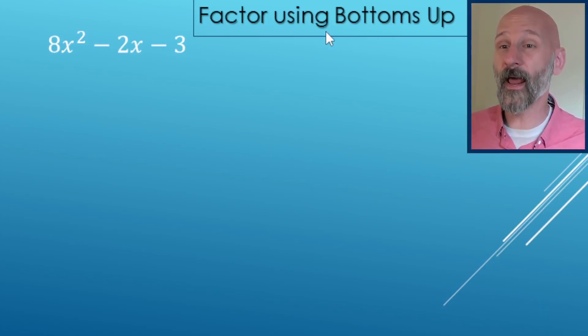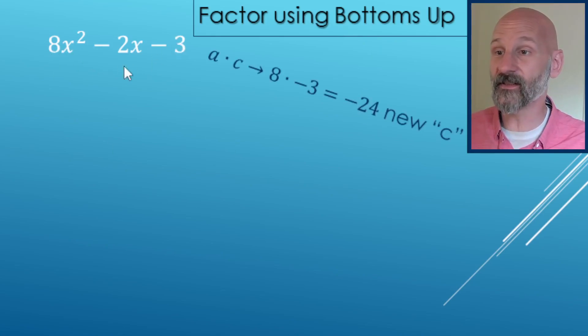Here we're going to factor a quadratic using the bottoms-up method. So here we go. Step number one, take the first and the last, the A and the C, and multiply them.